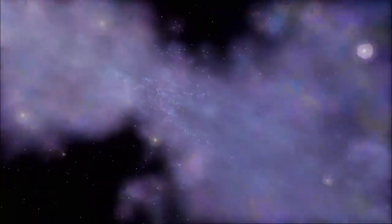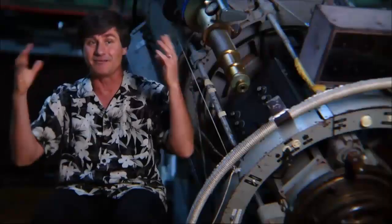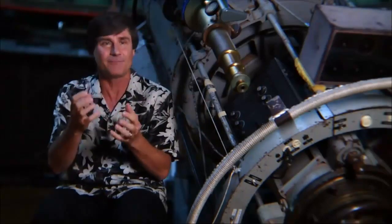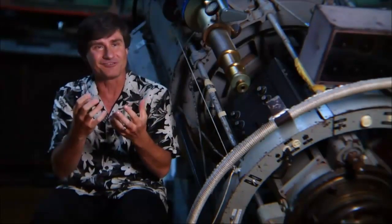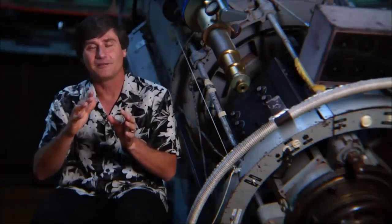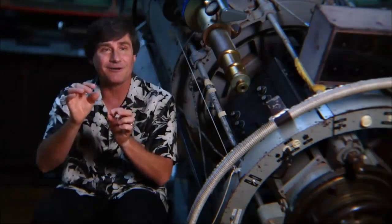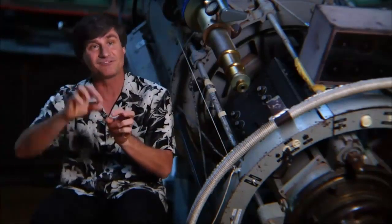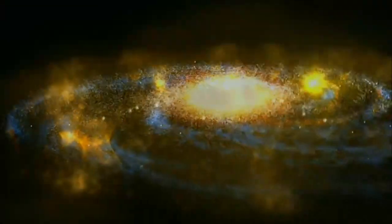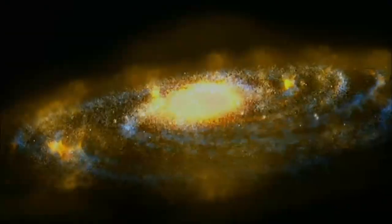Stars often die in the spiral arms because they are formed here more frequently, victims of their own enormous mass. The more massive stars are extremely powerful, extremely luminous. And to be that luminous, they have to use up their energy source very quickly. So massive stars live only short lives, and they are thus found in or near their birth places, the spiral arms, because they simply don't have enough time to wander away from the places where they were born.